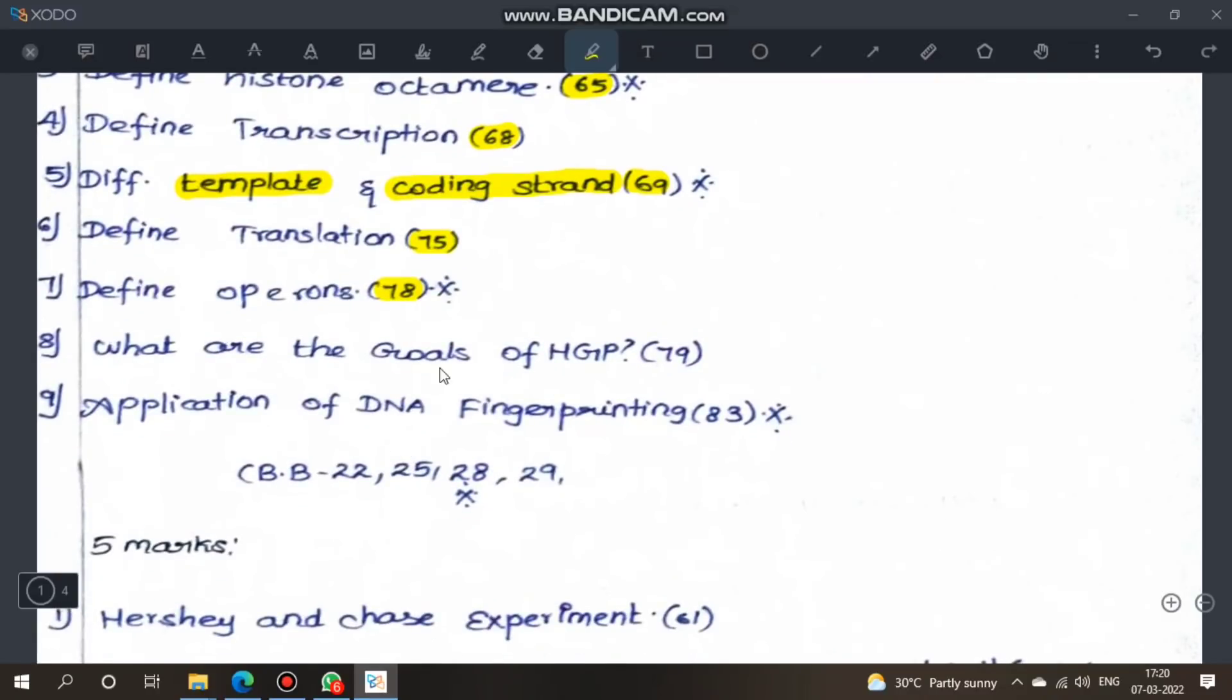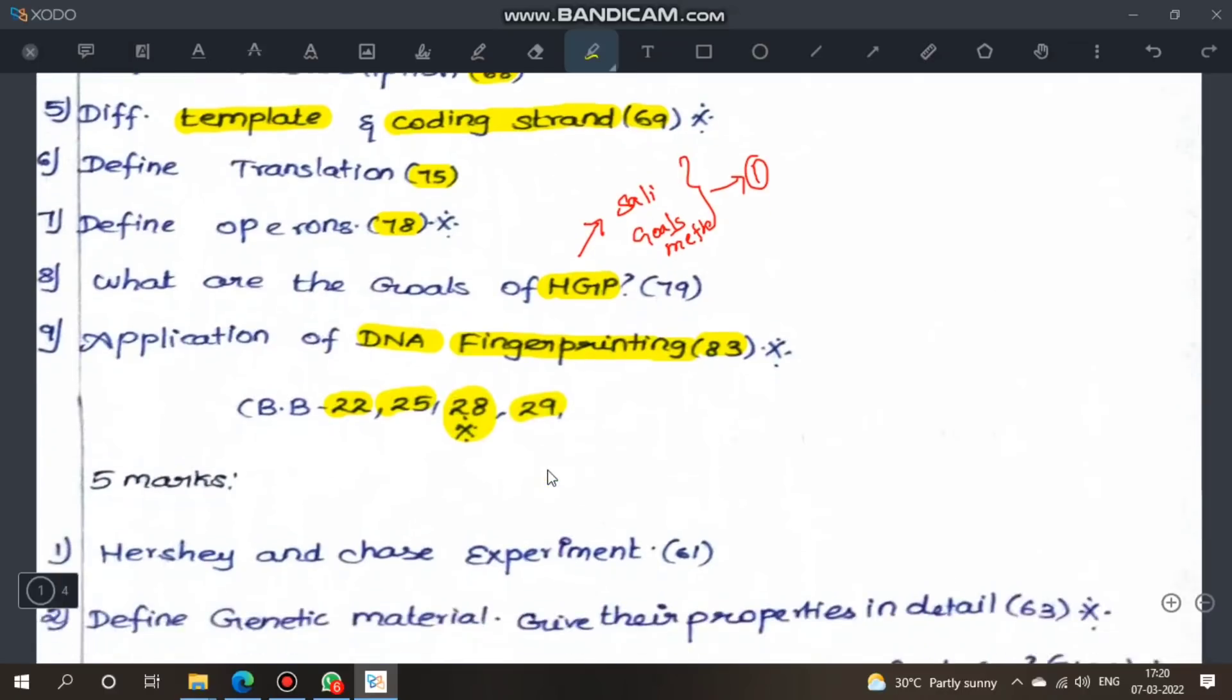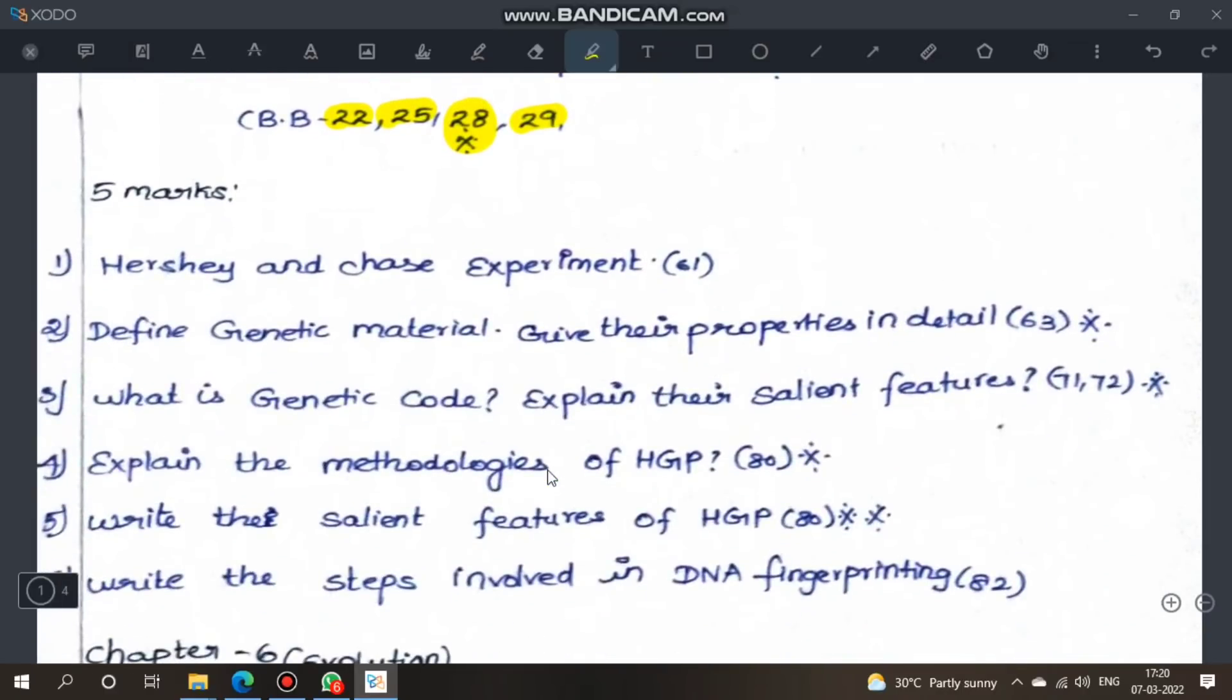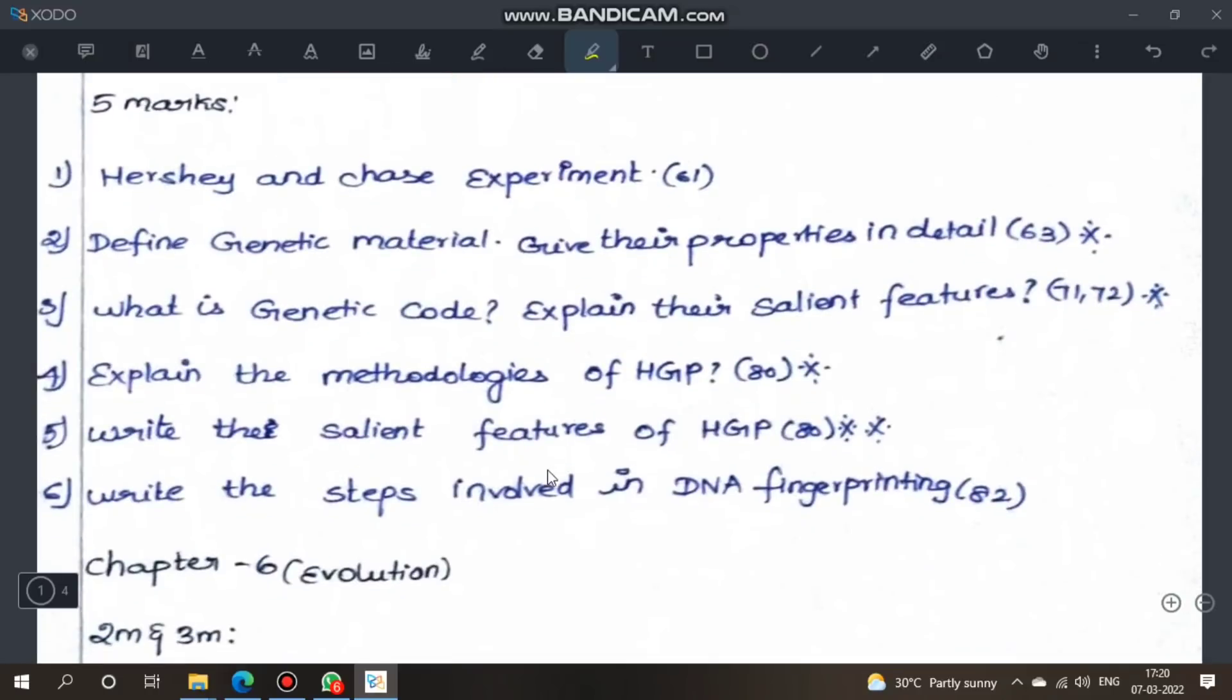What are goals of human genome project? HGP is human genome project. Goals and methodologies are important questions. Human genome project is important for molecular genetics. Next, applications of DNA fingerprinting, page 83. Book questions 22, 25, 28 are very important. 29 is also important. These are important two mark and three mark questions for biology.